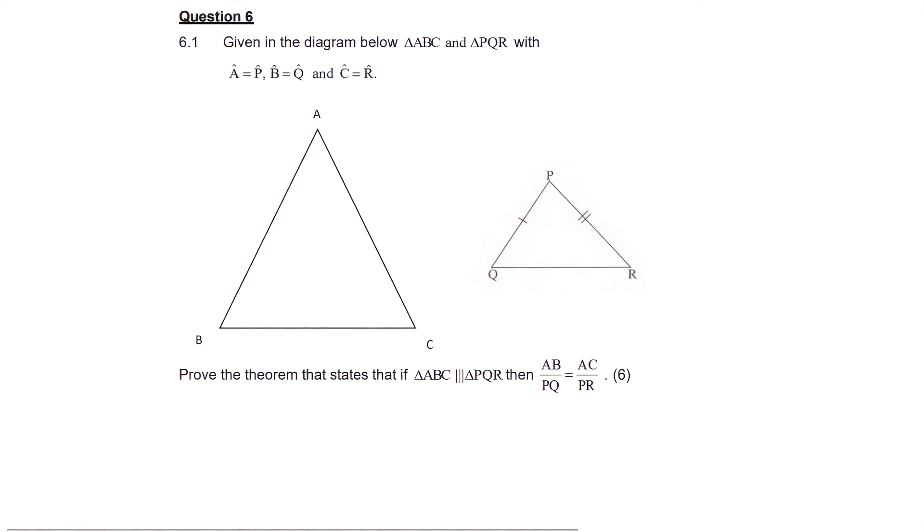Question 6, or 6.1 at least, is a proof. So in this proof, what we are given is, let's just look carefully over here, they tell us that these angles are the same. So angle A is equal to angle P, they told us that, and angle B is equal to angle Q, so let's show it like this. And then angle C is equal to angle R. And so that is what we've been given.